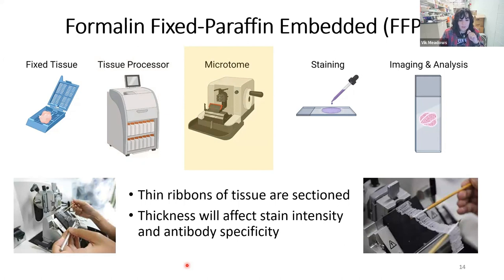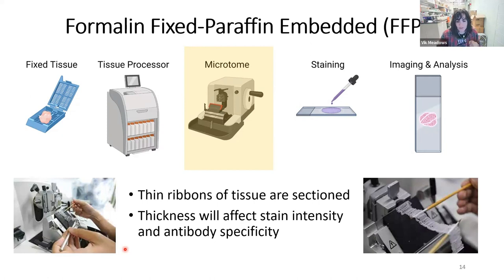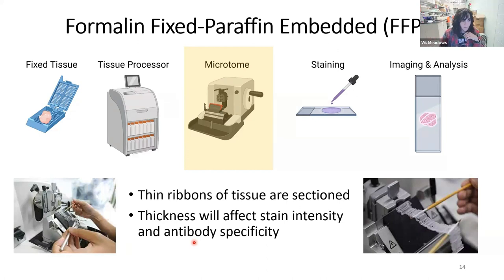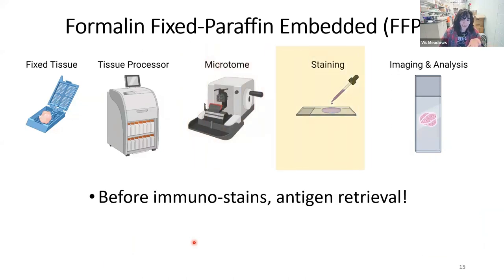After making paraffin blocks, you cut them using a microtome — a machine with a very sharp blade and a crank handle that moves your tissue up and down the front of the blade to produce thin ribbons of tissue sections. The thickness of your sections affects stain intensity and antibody specificity. Most commonly, tissue samples are cut at 4 to 6 microns thickness, though you can go up to 10 microns if staining for a specific molecule requiring higher thickness.